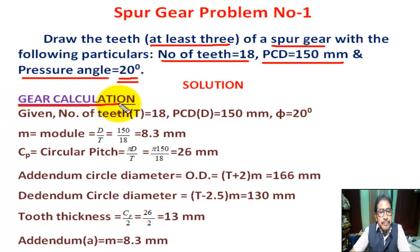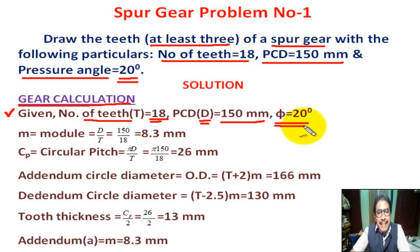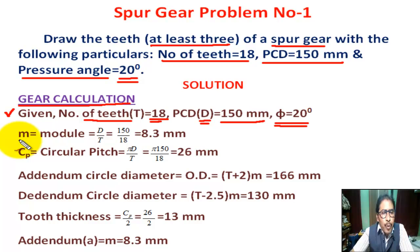Gear calculation. Given: number of teeth T = 18, pitch circle diameter PCD capital D = 150 millimeter, pressure angle φ = 20 degrees. Now we know module m = D / T = PCD / number of teeth = 150 / 18 = 8.3 millimeter.